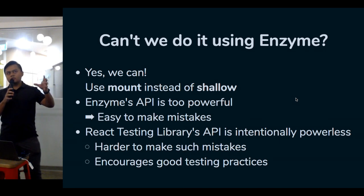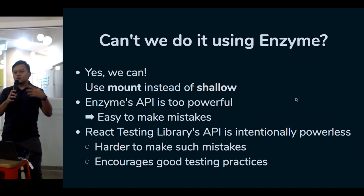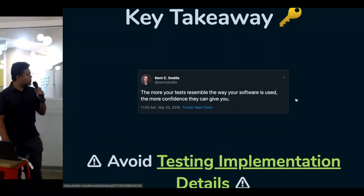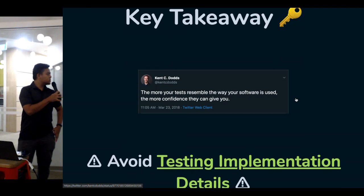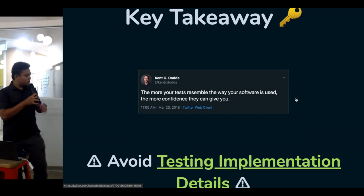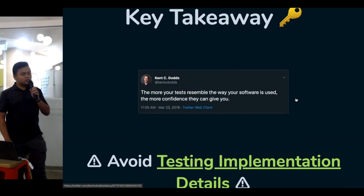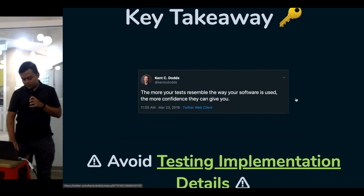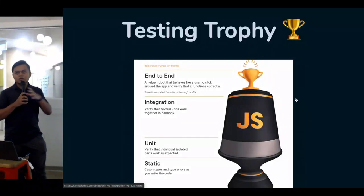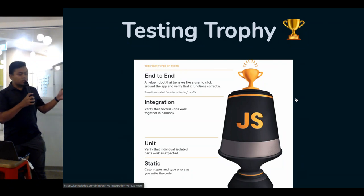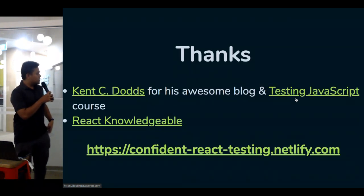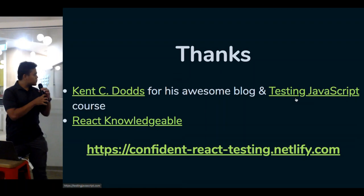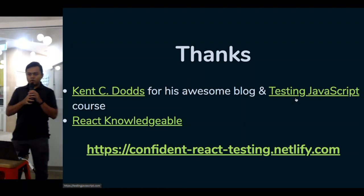The key takeaway is: the more your tests resemble the way your software is used, the more confidence they give you. Avoid testing implementation details, because testing implementation details makes false positives and false negatives more likely. There are many aspects of testing to explore beyond unit and integration tests. I was inspired by Kent C. Dodds and his Testing JavaScript course. Thank you.